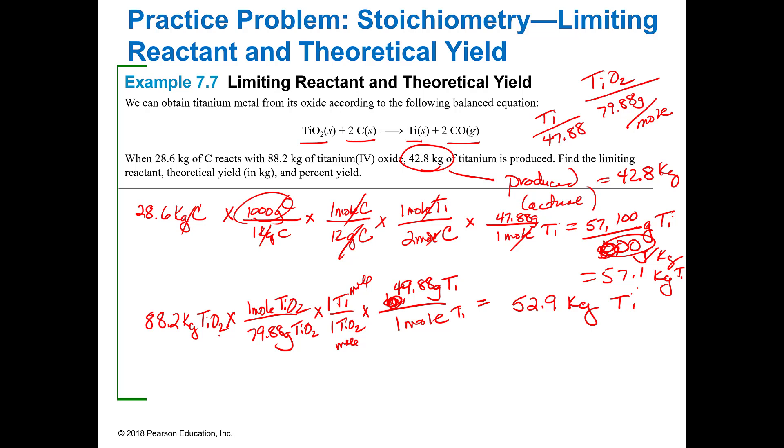So which one is the theoretical yield? Remember, it's going to be whichever one is smaller. So the 52.9 kilograms. So my TiO2 is my limiting reactant. My theoretical yield is 52.9. Now I need to go back and look. It said that when I was actually doing this process, I actually produced 42.8 kilograms. So to get my percent yield, I'm going to take my actual divided by my theoretical times 100, and that should give me 80.9 percent yield. And that's pretty good.